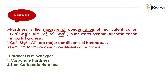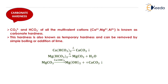Hardness is of two types: carbonate hardness and non-carbonate hardness. Carbonate and bicarbonate — that is CO₃²⁻ and HCO₃⁻ — of all multivalent cations such as calcium, magnesium, or aluminium is known as carbonate hardness. If calcium, magnesium, or aluminium carbonate or bicarbonate is present in the water, it will create carbonate hardness.